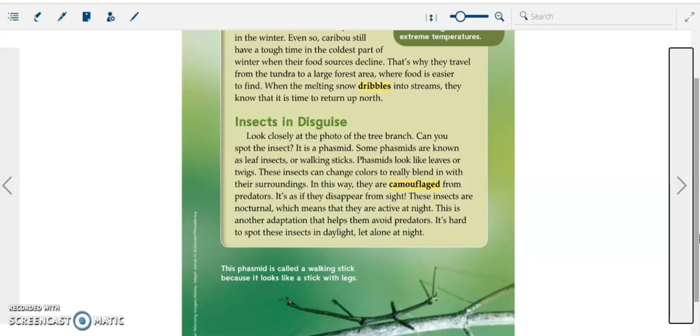In this way, they are camouflaged from predators. It's as if they disappear from sight. These insects are nocturnal, which means that they are active at night. This is another adaptation that helps them avoid predators. It's hard to spot these insects in daylight, let alone at night.